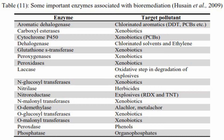Looking at this table, it shows some important enzymes associated with bioremediation. The first example is the aromatic dehalogenase enzyme, which targets chlorinated aromatic compounds such as DDT. Other enzymes include carboxyl esterase, which targets xenobiotics, as well as dioxygenase, peroxidase, glycosylase, and hydrolase enzymes, each with different targets and pollutants.